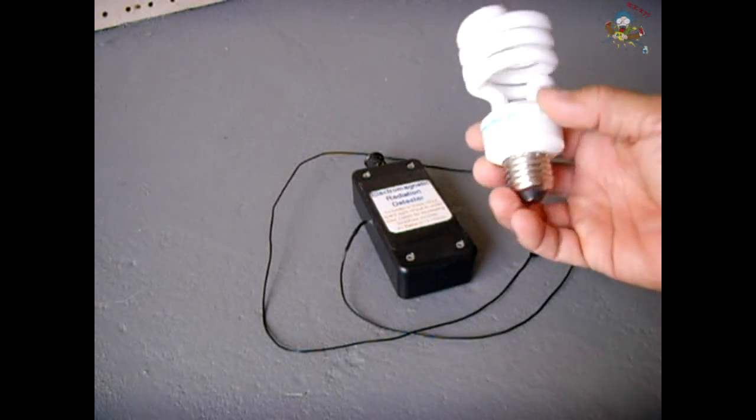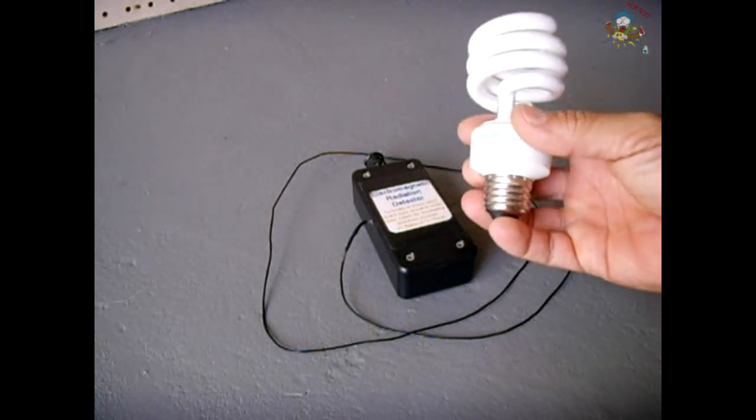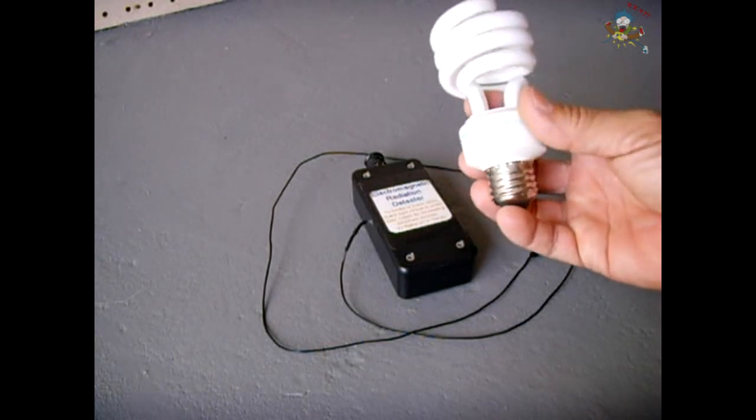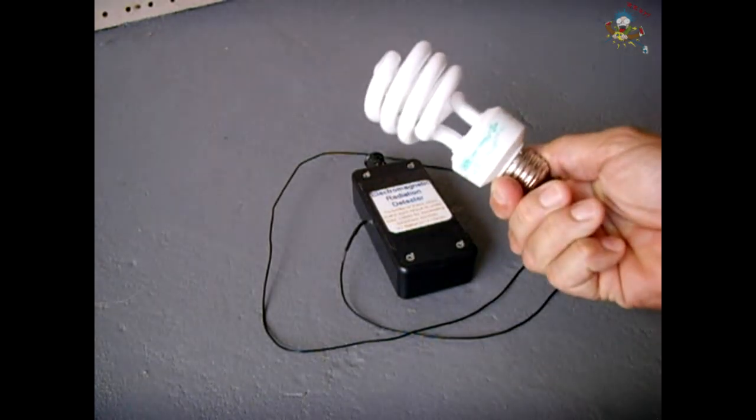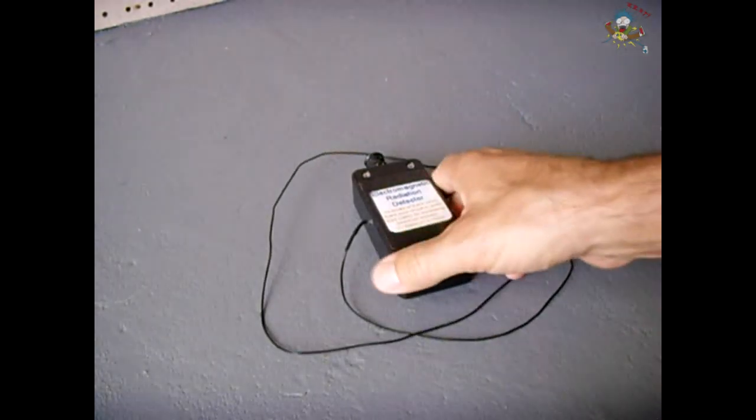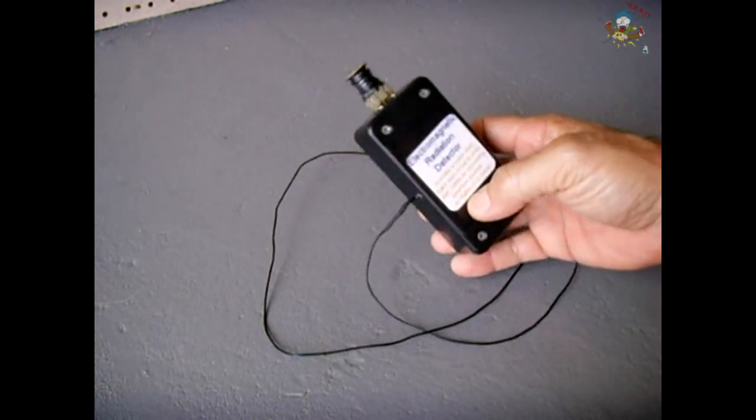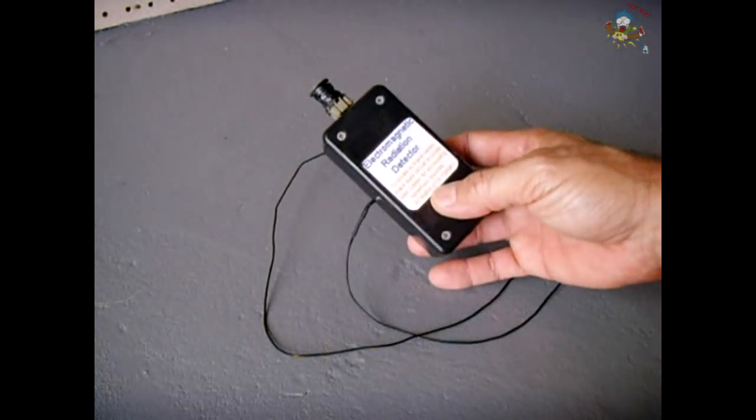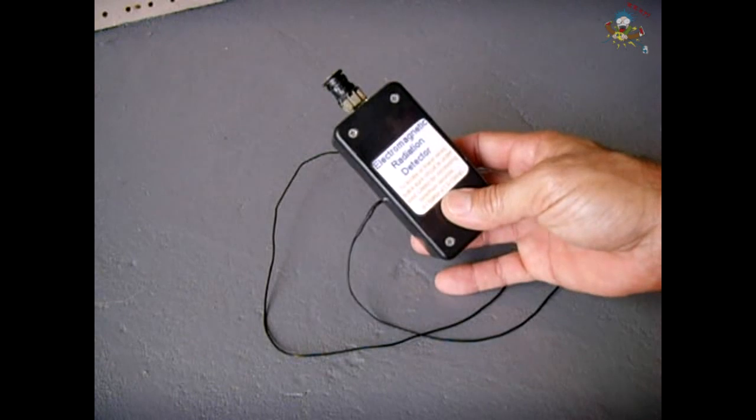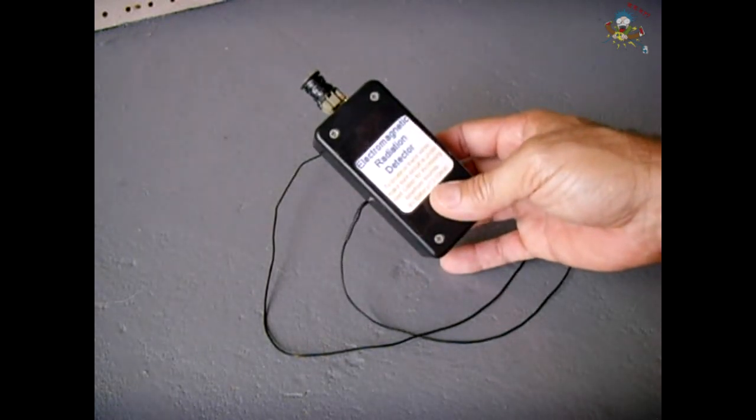What you're going to do is if you have a light fixture you're going to screw in this light bulb into the light fixture and then you're going to turn on the wall switch. Once that switch is turned on and this is powered up you will be able to take this device and trace the wire from the wall switch no matter where it goes to the point where it gets to that light.